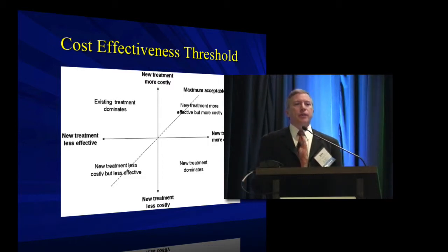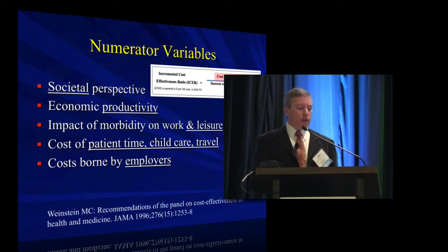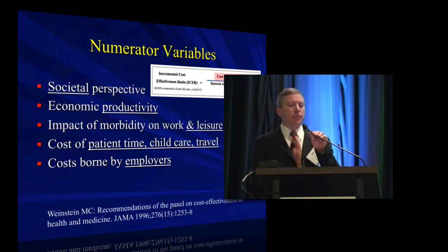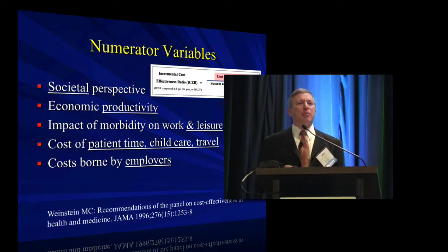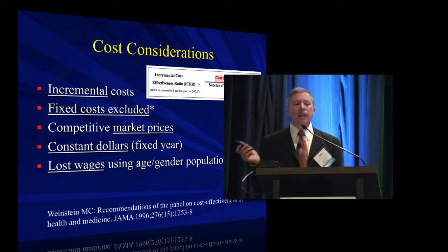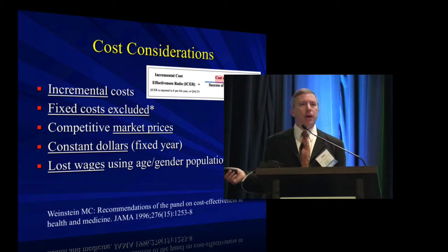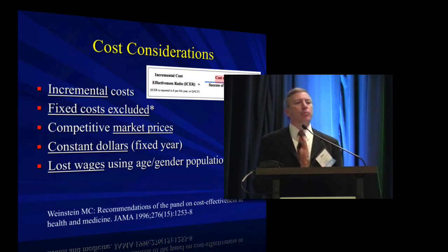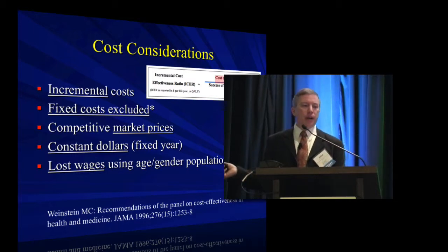The numerator variables, as I described, give you a broader perspective than you've ever looked at before — including a lot of impact on someone's time. Costs by employers — we've never really talked about that in some of this. The incremental costs have a lot of methodology and standards around them. It's easy to incorporate this in some of the models, but some of these data are a little hard to come by. There are a lot of average wage data out there per gender and age that can be incorporated in these models.